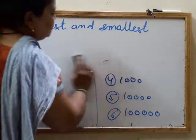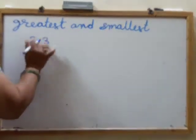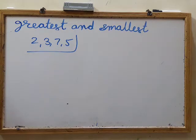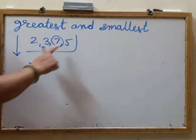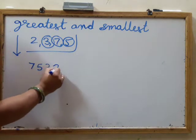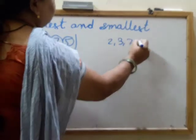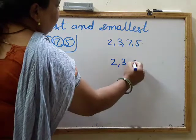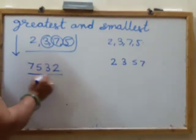Now we will learn to form numbers with given digits. Given the digits 2, 3, 7, and 5, we form the greatest number by writing the largest digit first, then smaller ones: 7, 5, 3, 2. For the smallest number, we write the smallest digit first, then bigger ones: 2, 3, 5, 7. So 7532 is the greatest and 2357 is the smallest.